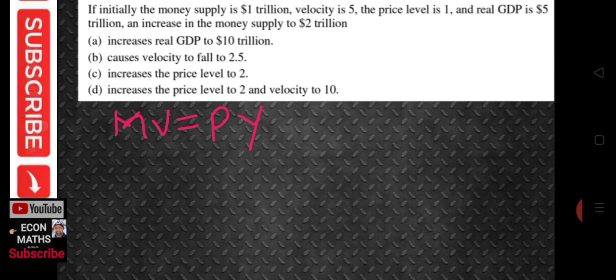Initially, the money supply is 1 trillion, so I will write 1 times velocity 5, equals price level 1 times real GDP 5 trillion. Initially we have equilibrium because 1 times 5 equals 5, and we have 5 on the right side.